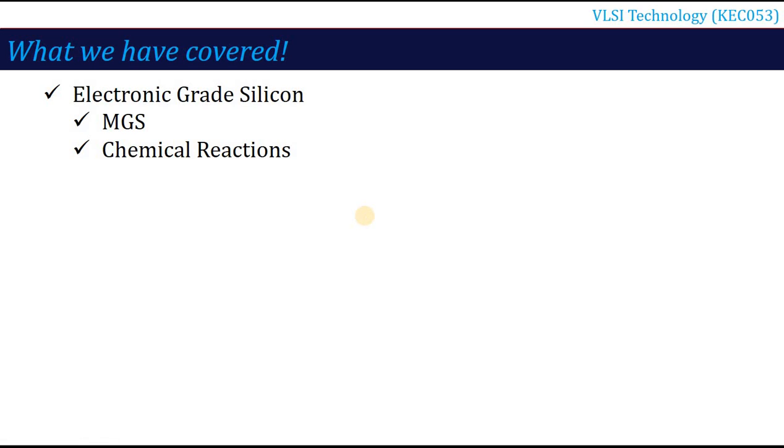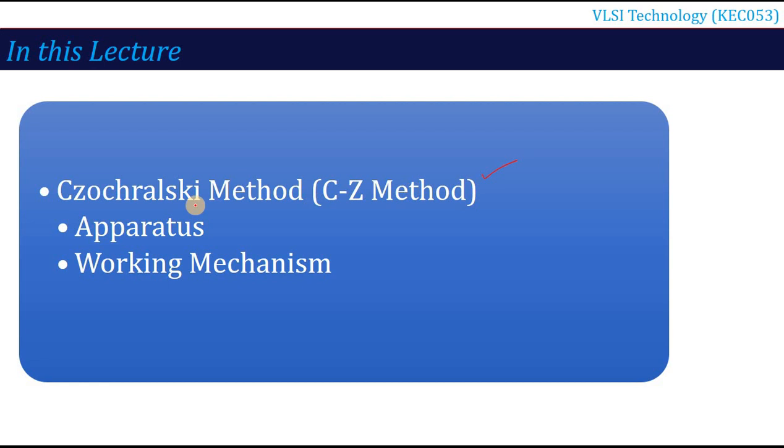We have covered the first step: what is EGS, electronic grade silicon, how it is produced and what is MGS concept, metallurgical grade silicon. The first step to produce the EGS, and then after chemical reactions we have developed EGS. Now here the EGS we have got, the second step which we are going to talk about in this lecture, that is CZ method.